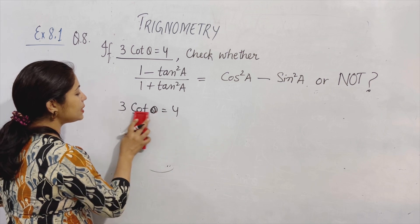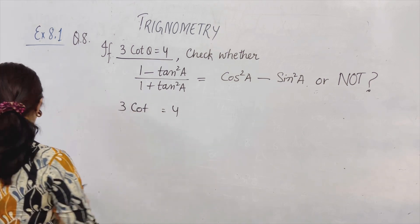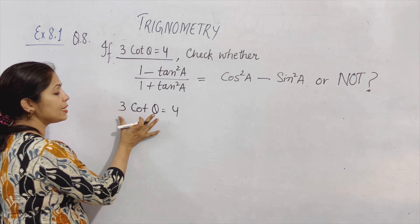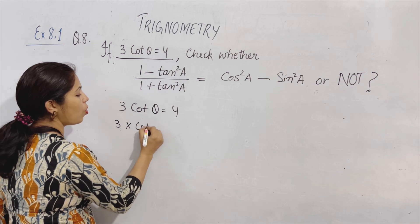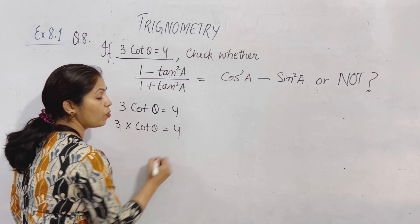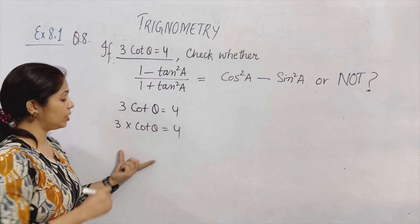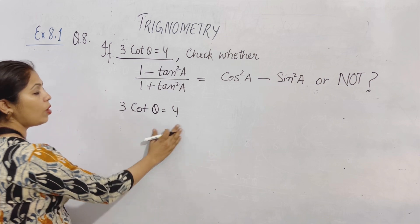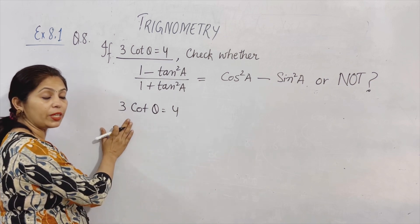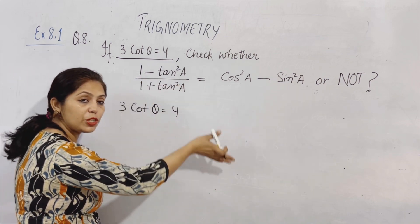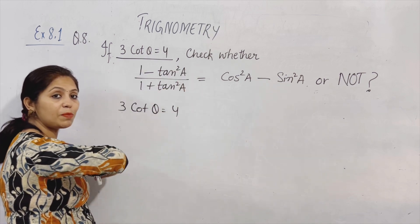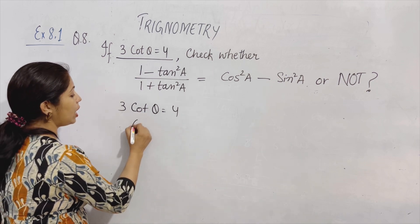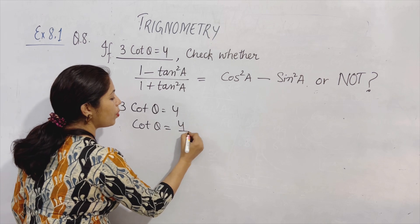लेकिन जो आगे numbers दिए होते हैं, अगर आगे कोई constant number दिया हुआ है — जैसे इस question में यहाँ पर 3 दिया हुआ है — this is separate. Basically, इसका मतलब है 3 multiply cot theta is equal to 4. यह समझना बहुत जरूरी है. तो यहाँ से हम 3 को अलग कर सकते हैं — जो multiply में होता है वो divide में बन जाएगा. तो यहाँ पर आ गया cot theta is equal to 4 upon 3.